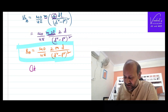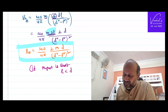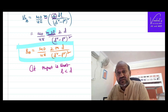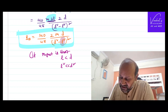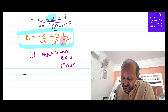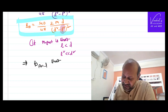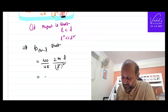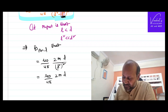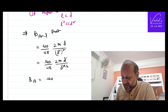For a short bar magnet, the length l is much smaller than the distance d, so l² becomes negligible compared to d². We can ignore l² in the equation. The denominator (d² − l²)² becomes (d²)² = d⁴. Then B_axial = (μ₀/4π) × 2Md / d⁴, and cancelling one d from numerator and denominator gives B_axial = (μ₀/4π) × 2M / d³.